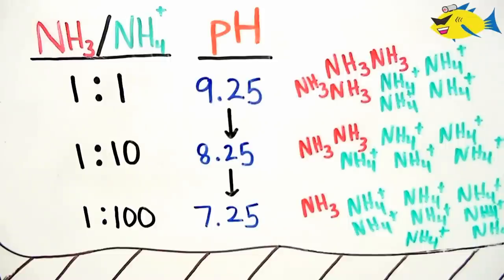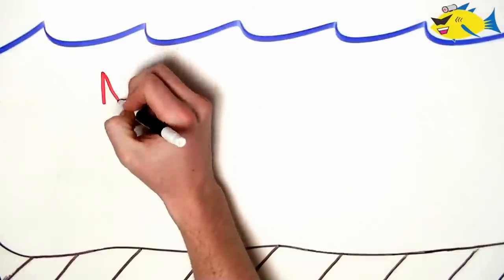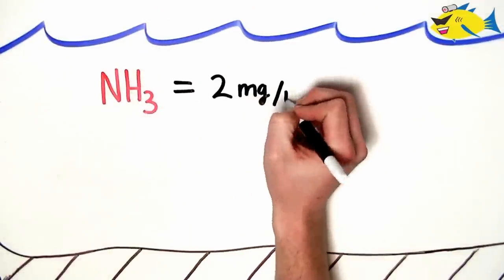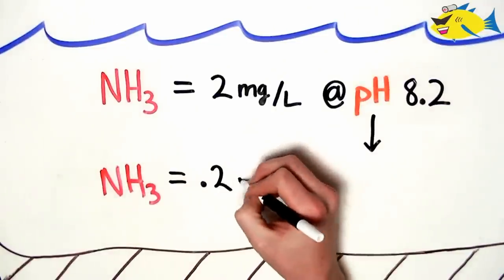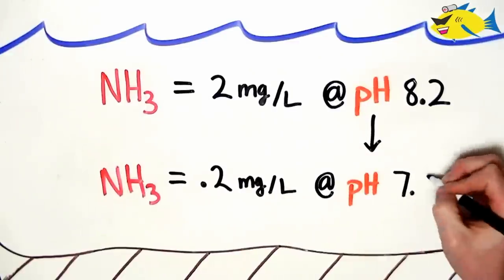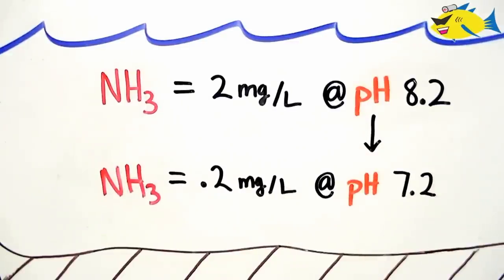From this depiction, we see that ammonia concentrations are reduced and ammonium concentrations are increased as the pH gets lower. To put this into perspective, we'll highlight another example. If we have a stable ammonia concentration of 2 mg per liter at pH 8.2, we will have a concentration of 10 times less, being 0.2 mg per liter at a pH of 7.2. If the pH continued to decline to 6.2, we would have 100 times less ammonia than we did initially at pH 8.2.